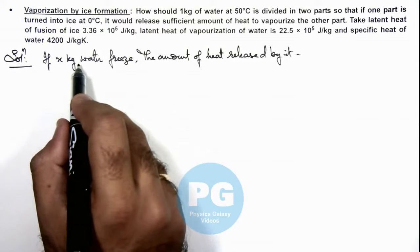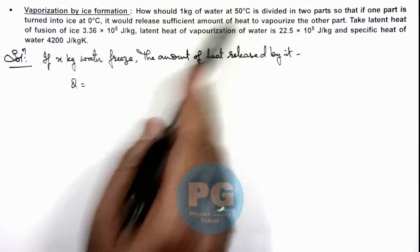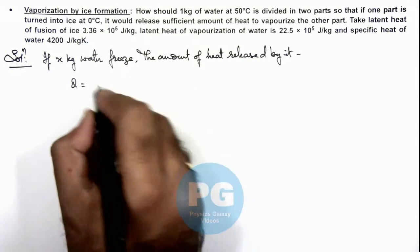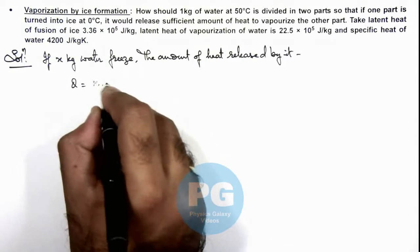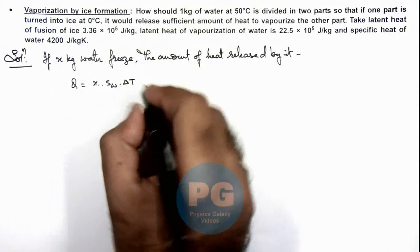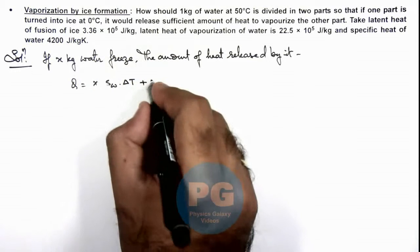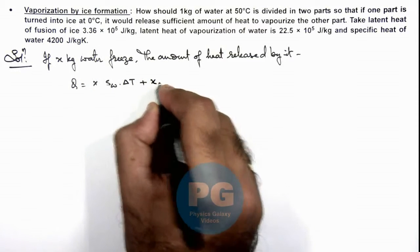First, x kilogram of water will drop from 50 degrees Celsius to zero degrees Celsius, so we can write x multiplied by specific heat of water multiplied by delta T, plus the amount of heat it releases is x multiplied by latent heat of fusion.